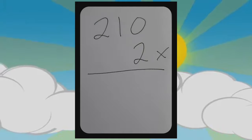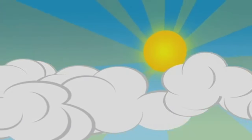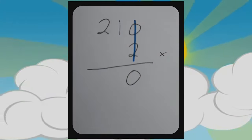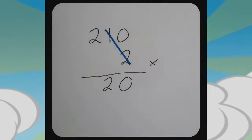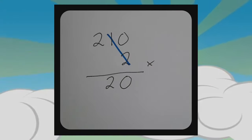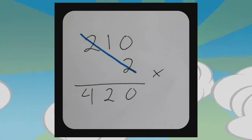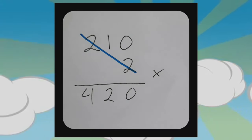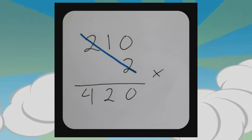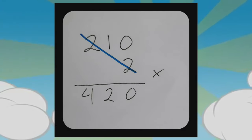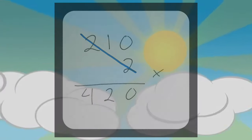Ini contohnya 210 dikali 2. Pertama dimulai dari satuan: 2 kali 0 hasilnya 0. Di puluhan: 2 kali 1 hasilnya 2. Selanjutnya pada bagian ratusan yaitu 2 kali 2 hasilnya 4, dan ketemunya 420. Itu dengan cara yang pendek.